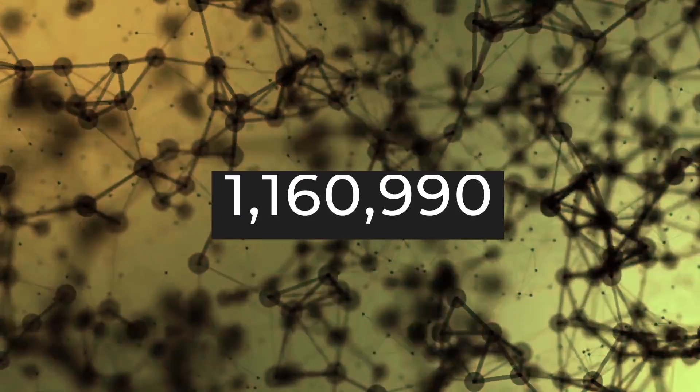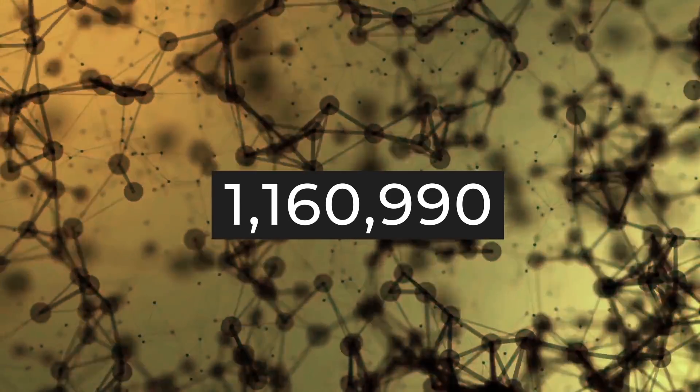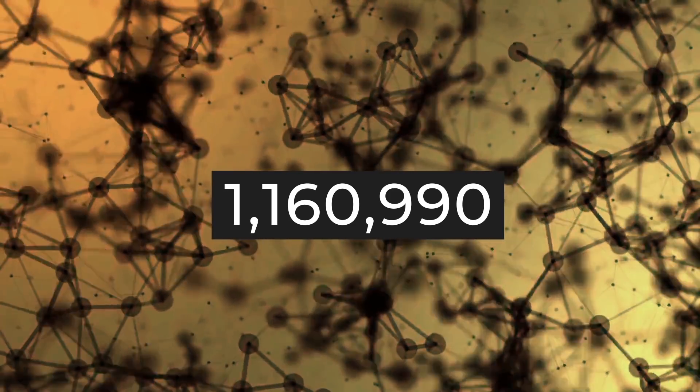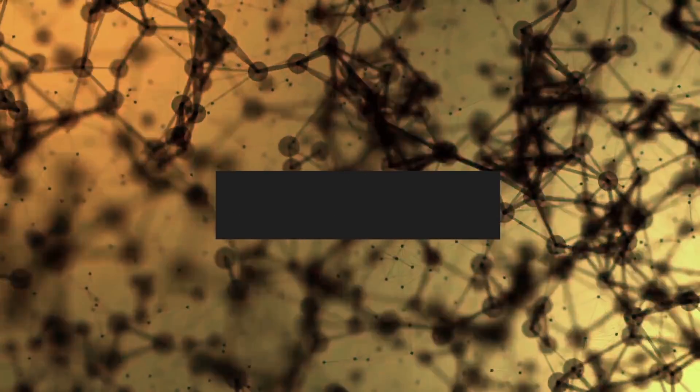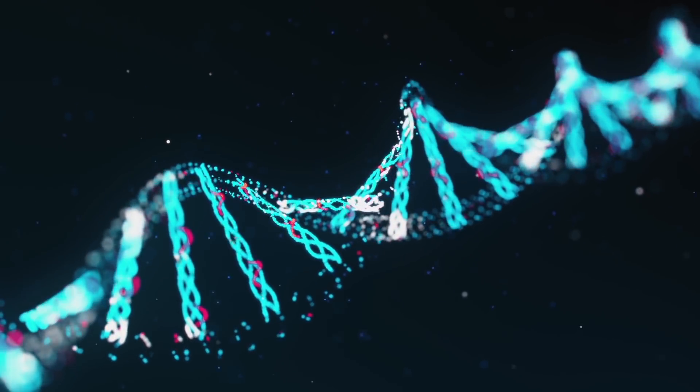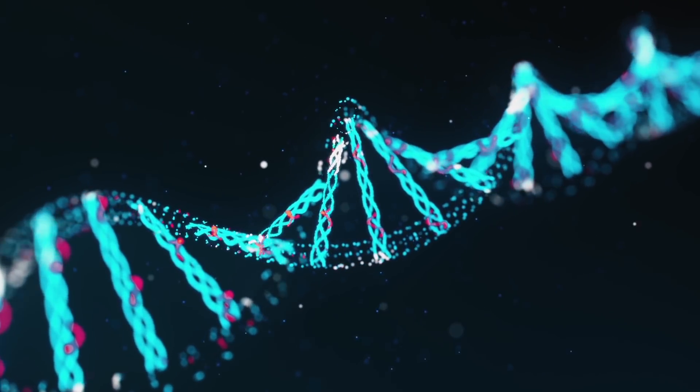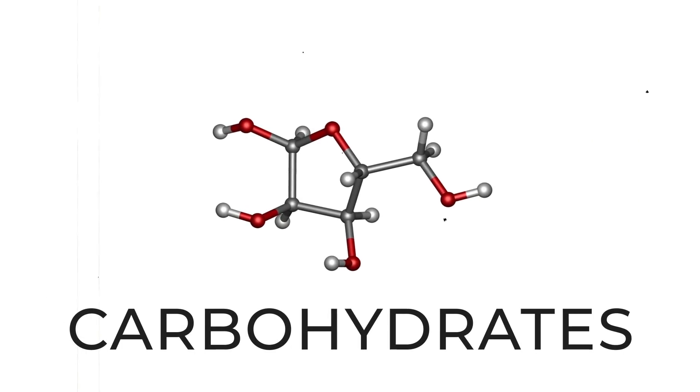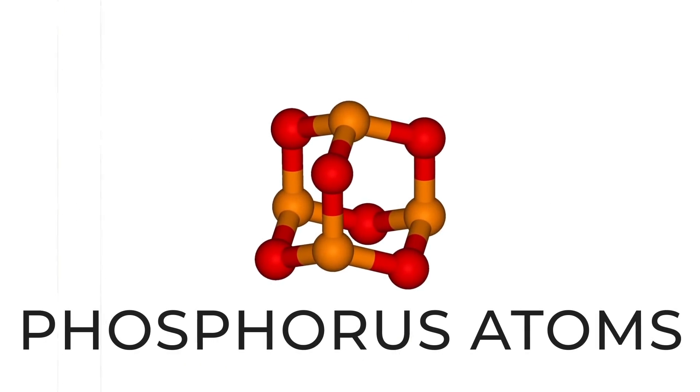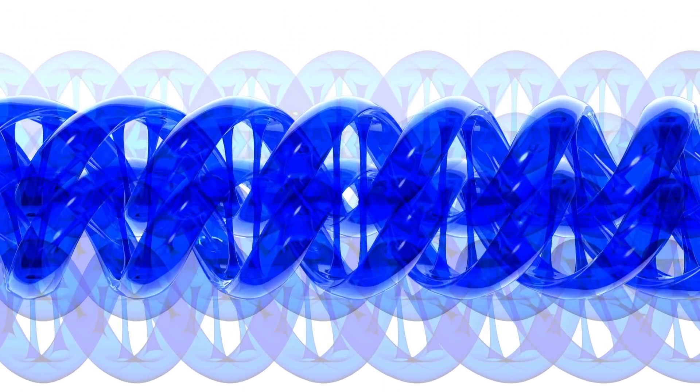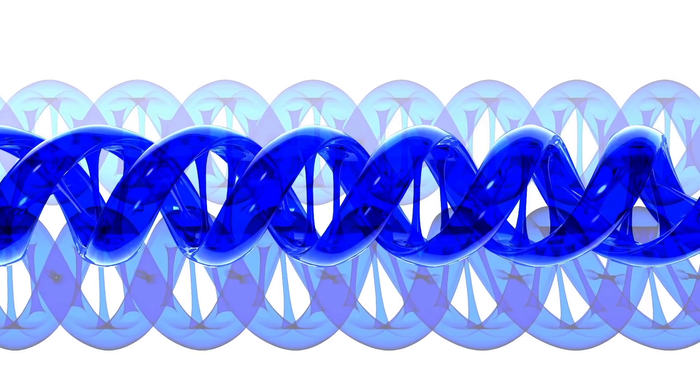The results were more than impressive. The program found about 1,160,990 types of molecules that meet all of the necessary criteria. The only difference between the molecules obtained and DNA is the absence of characteristic carbohydrates and phosphorus atoms. Otherwise, especially in functionality, the new molecules are very similar to DNA.